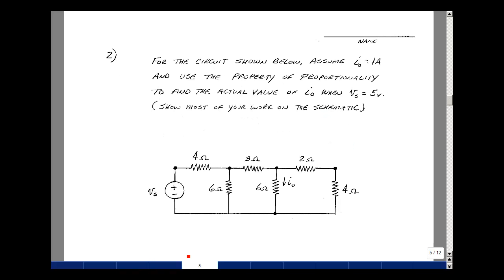For problem number two, given this circuit, assume that this current I-out is equal to 1 amp, and use the property of proportionality to find the actual value of I-naught when V-s is 5 volts.